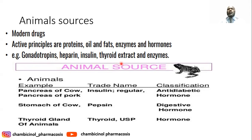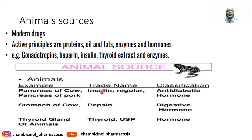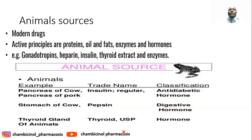For example, insulin can be obtained from the pancreas of a cow or pig, used as an antidiabetic especially for type 1 diabetes. From the stomach of a cow, you can obtain the pepsin enzyme, responsible for protein metabolism — this is a digestive enzyme. Also, thyroid extract can be obtained from animals as a hormone for treating diseases related to thyroxine hormone deficiency.